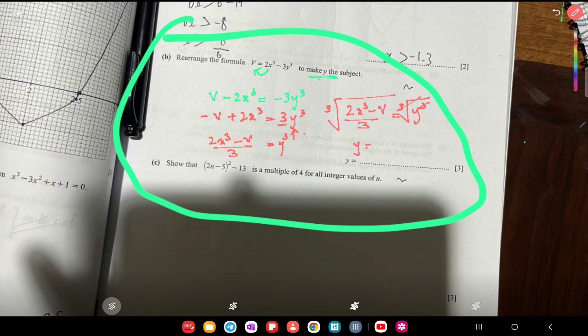So y = ∛((2x³ - v)/3). This is your final answer.